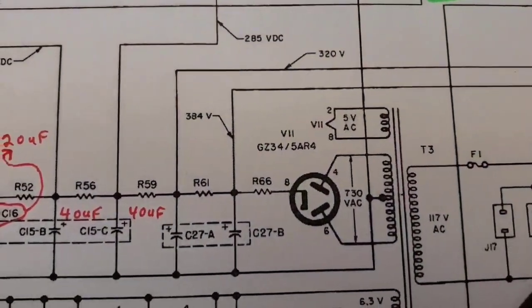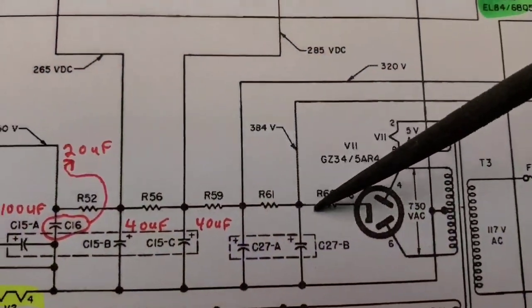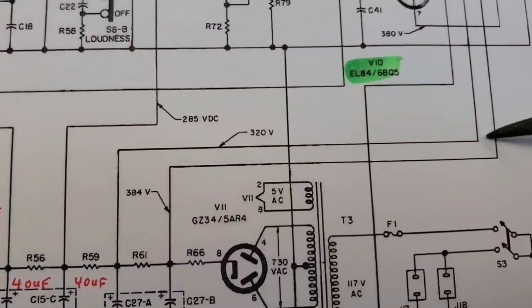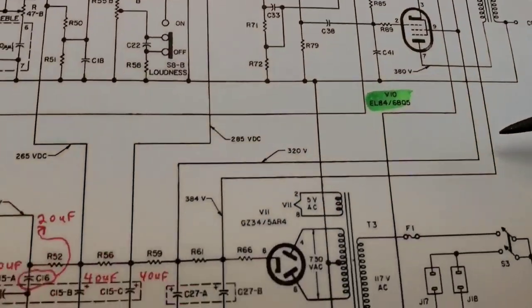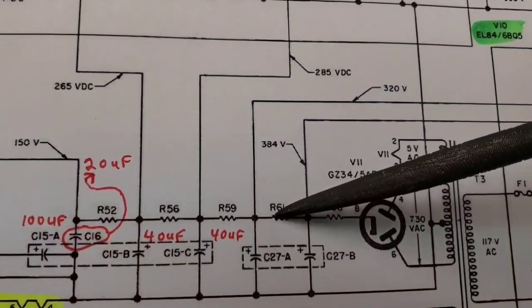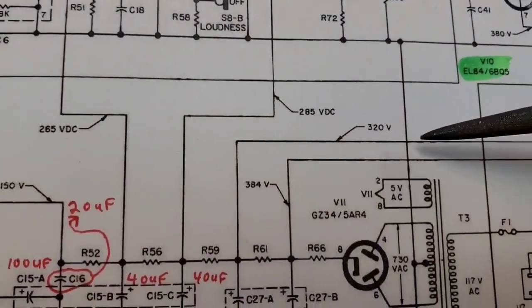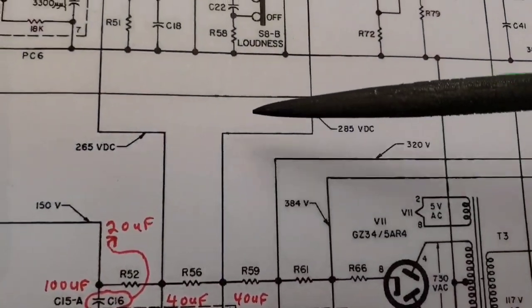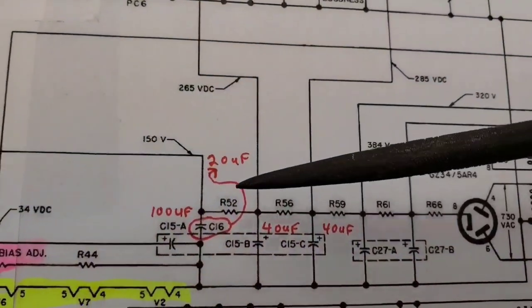So you have your rectifier tube. Here's your output. And this is where you have your 384 volts. It goes up to your output tubes. That's your output power, basically. And another dropping resistor. You can see it's slightly less voltage. And then another dropping resistor, and slightly less voltage, all the way down the line.